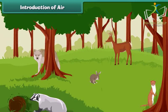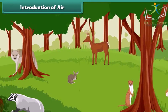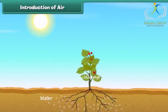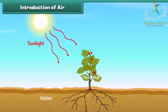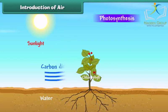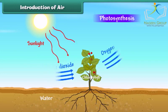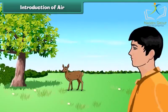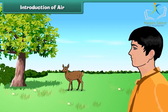Air is very important for almost all life on earth, including plants and animals. Plants need carbon dioxide from air to do photosynthesis and release oxygen into the air. Human beings and animals need to breathe air to get the oxygen they need to survive.